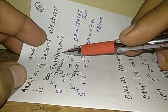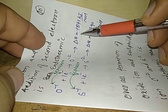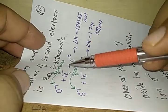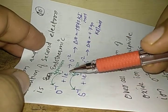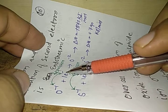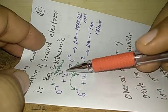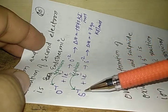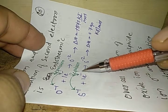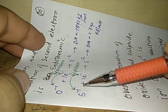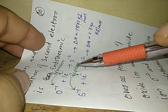Thus addition of the second electron is endothermic. We need to give energy from outside and that is why the value of delta H is positive. The negative ion and the added electron are both negative, so there is repulsion between them. S minus 1 is a negative ion and the electron is also negative, so there is repulsion between S minus 1 and the electron.